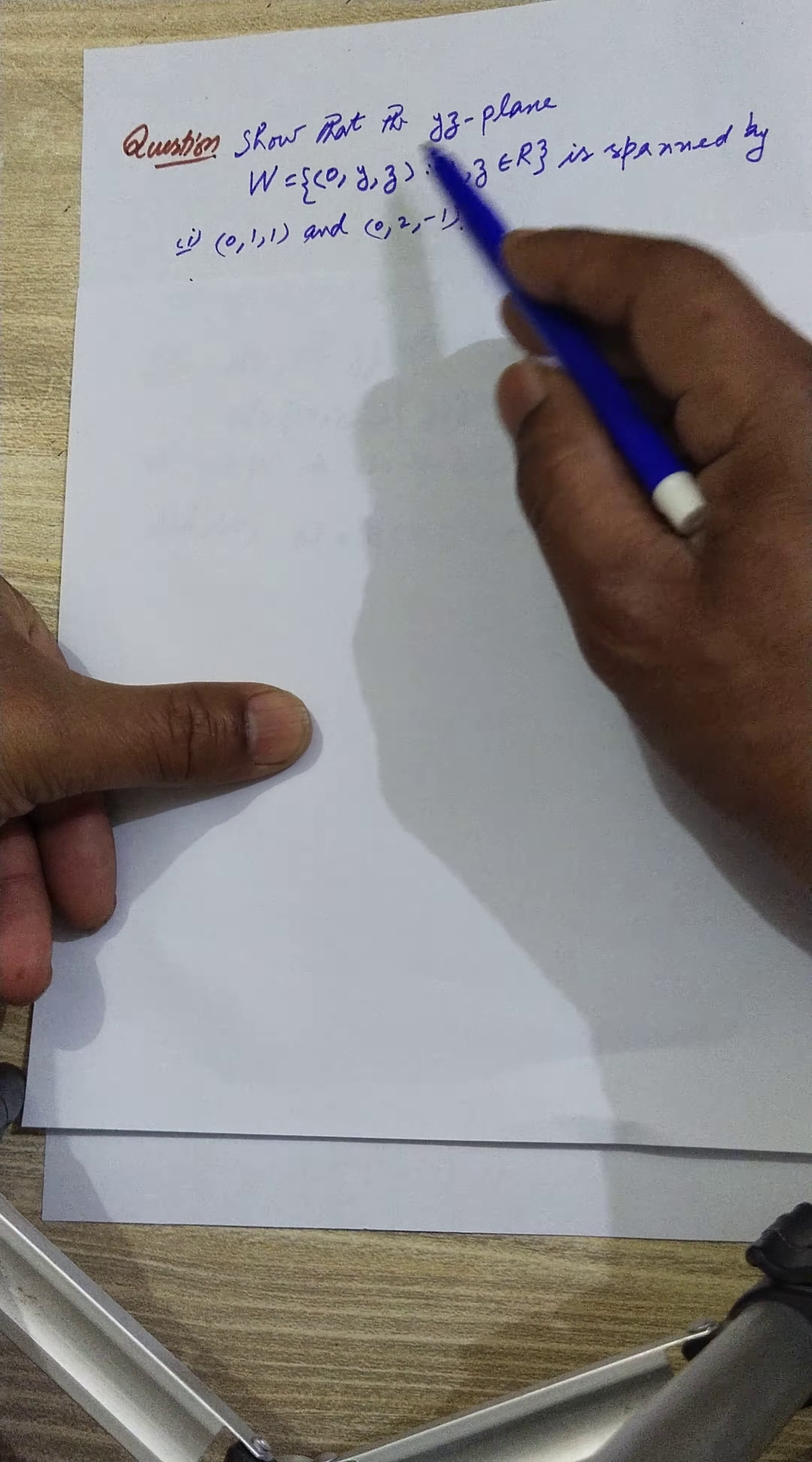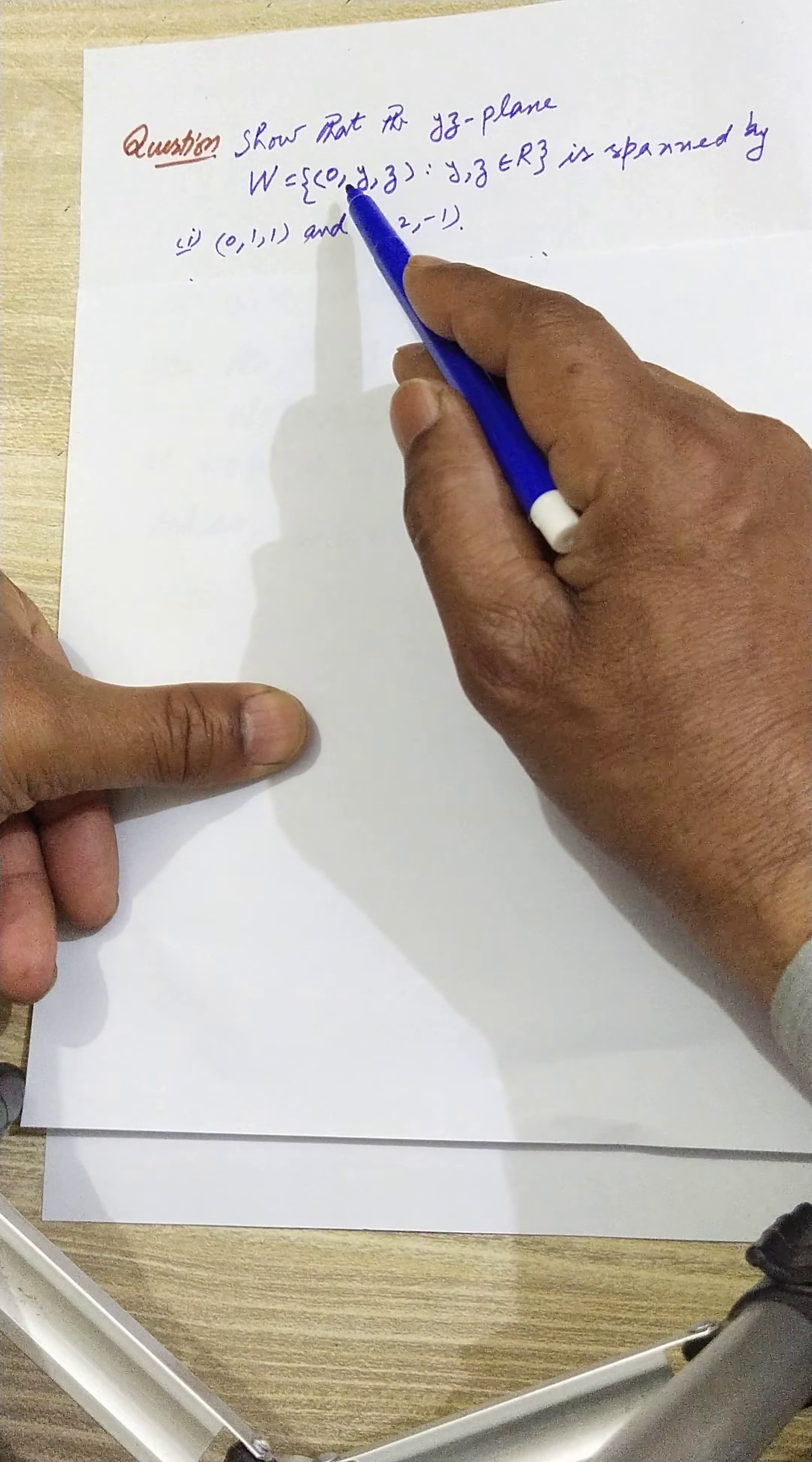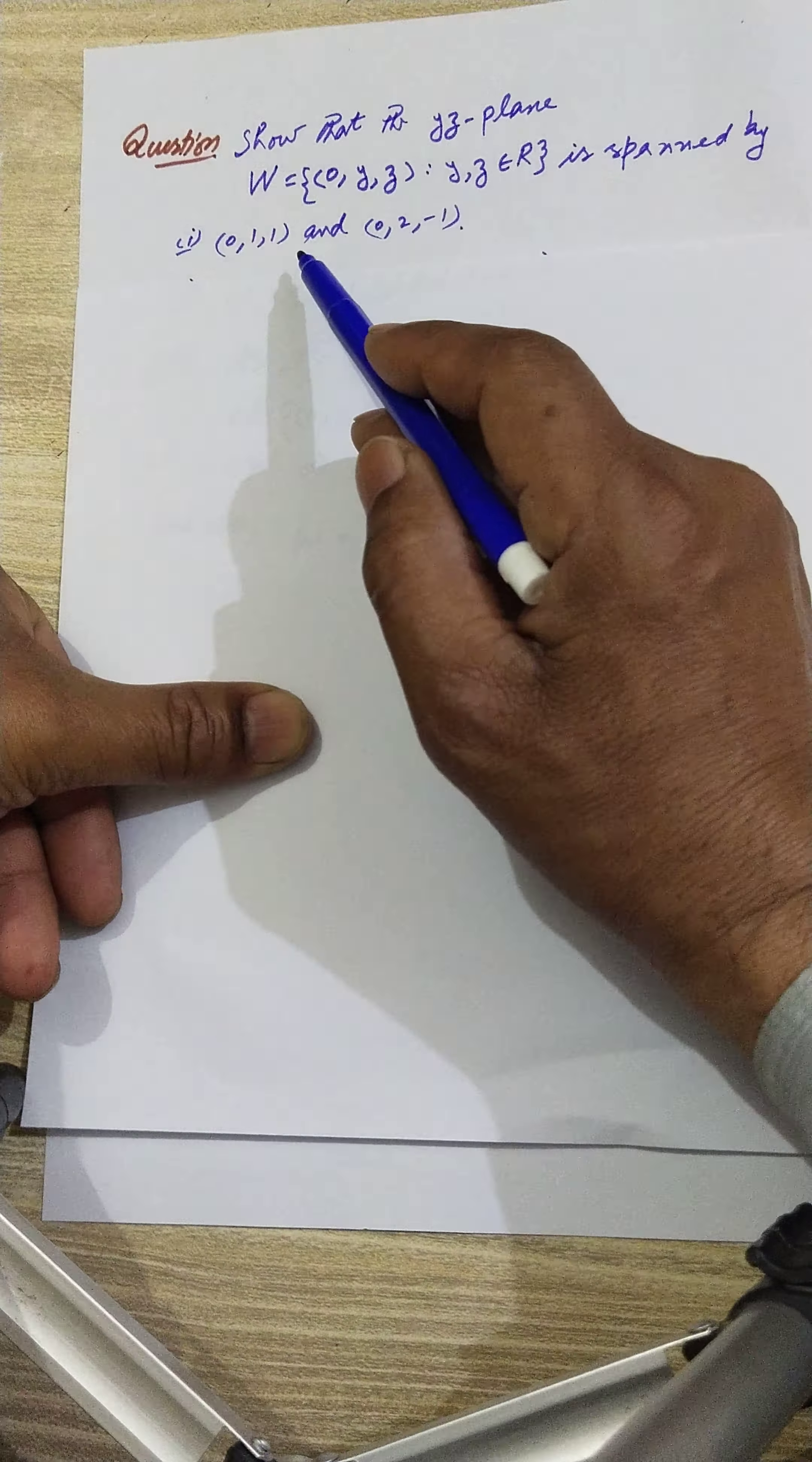The YZ plane, obviously x=0, is denoted by W = {(0,y,z) such that y,z belongs to R} is spanned by (0,1,1) and (0,2,-1). This is a question which we will see.